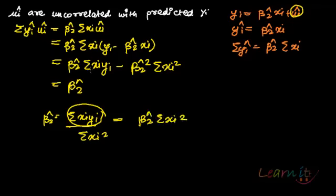So you will put in place of summation x_i y_i, that is beta 2 hat into summation x_i square. So beta 2 hat was already there, into beta 2 hat summation x_i square would be beta 2 hat square into summation of x_i square minus beta 2 hat square into summation of x_i square. Clear?